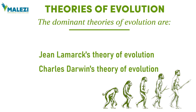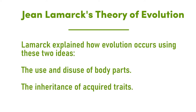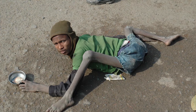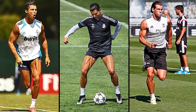The first idea Lamarck used is use and disuse of body parts. This tells us that the body parts we put to use get stronger, while the ones we don't use get weaker. For example, look at the pictures: the first shows a man with very thin legs — because those legs were not put to use, they are getting thinner. The second picture shows footballers whose legs are getting stronger because they use them constantly.